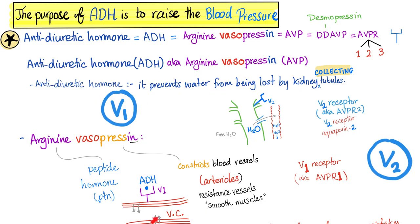Where is V1? V1 is in blood vessels. When ADH stimulates V1 receptor, the vessel will constrict, decreasing your radius, increasing the total peripheral resistance, and raising your blood pressure. When ADH acts on the V2 receptor, it will open V2 aquaporin channels in the collecting tubules of the kidney, which will help reabsorb pure water, which will also raise your blood pressure.